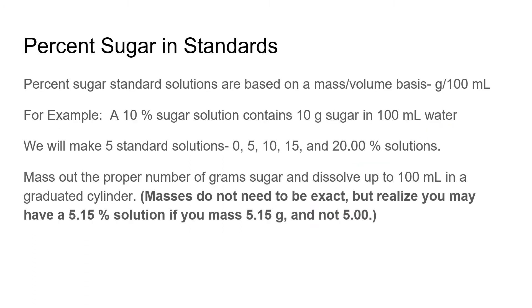First we're going to make the standards that are just going to be sugar solutions. There will be five of them, from zero to twenty percent, and we're going to do them in a hundred milliliters. Whatever the percentage is is going to be the mass of sugar in the beaker, and then we're going to dilute to a hundred milliliters of water. Remember that the mass doesn't have to be exactly five point zero zero zero, but think about the percent that you have if we don't weigh out exactly five grams.